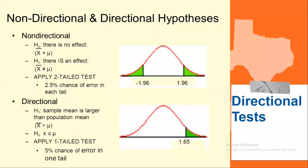When a research study predicts a specific direction for the treatment effect — increase or decrease — it is possible to incorporate the directional prediction into the hypothesis test. The result is called a directional test or a one-tailed test. A directional test includes the directional prediction in the statement of the hypotheses and in the location of the critical region. For example, if the original population has a mean of 80 and the treatment is predicted to increase scores, the null hypothesis states that after treatment the mean is less than or equal to 80. The entire critical region would be located in the right-hand tail of the distribution.